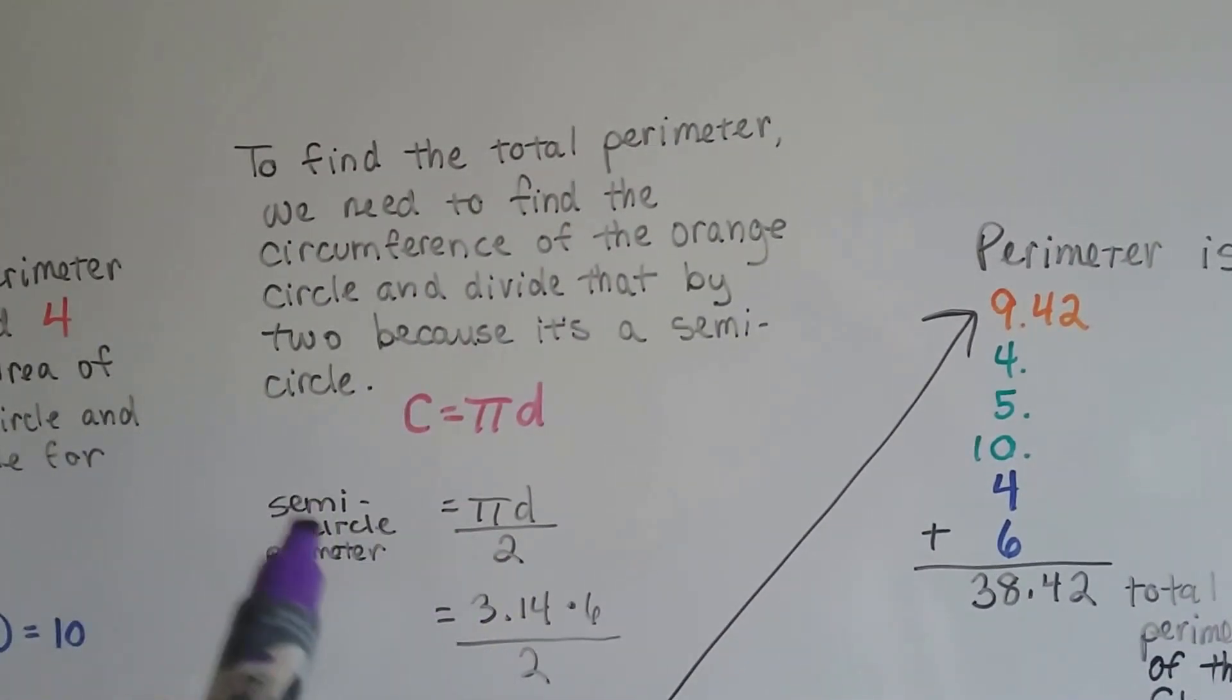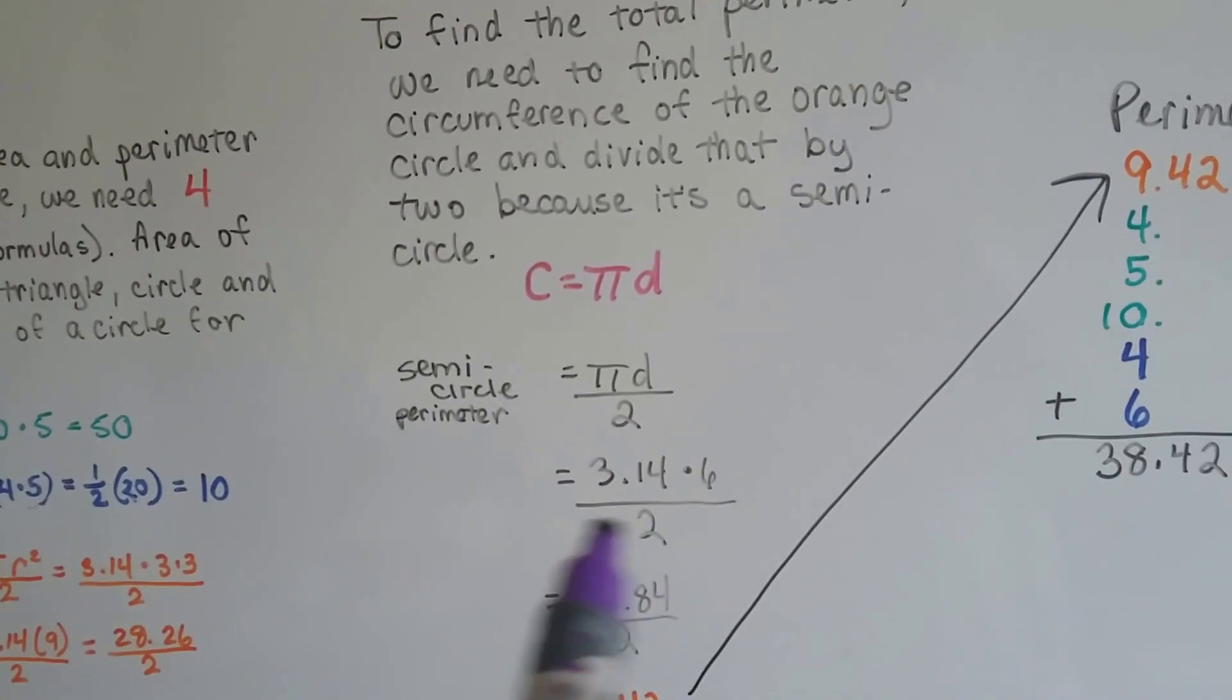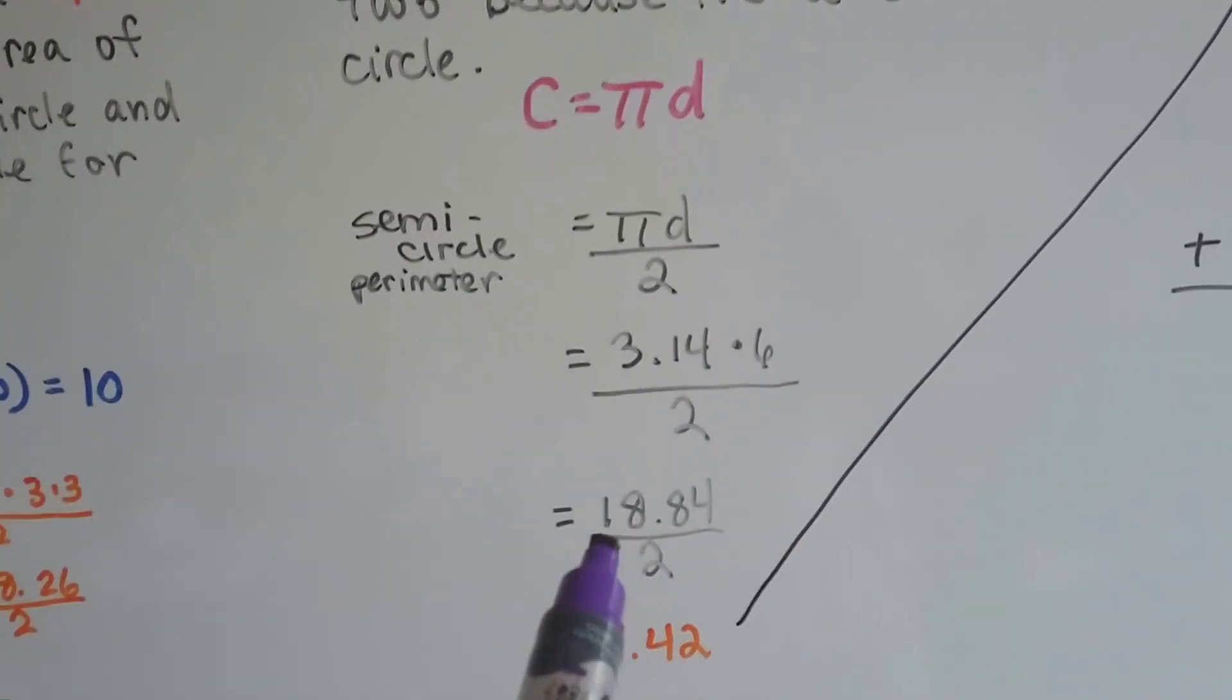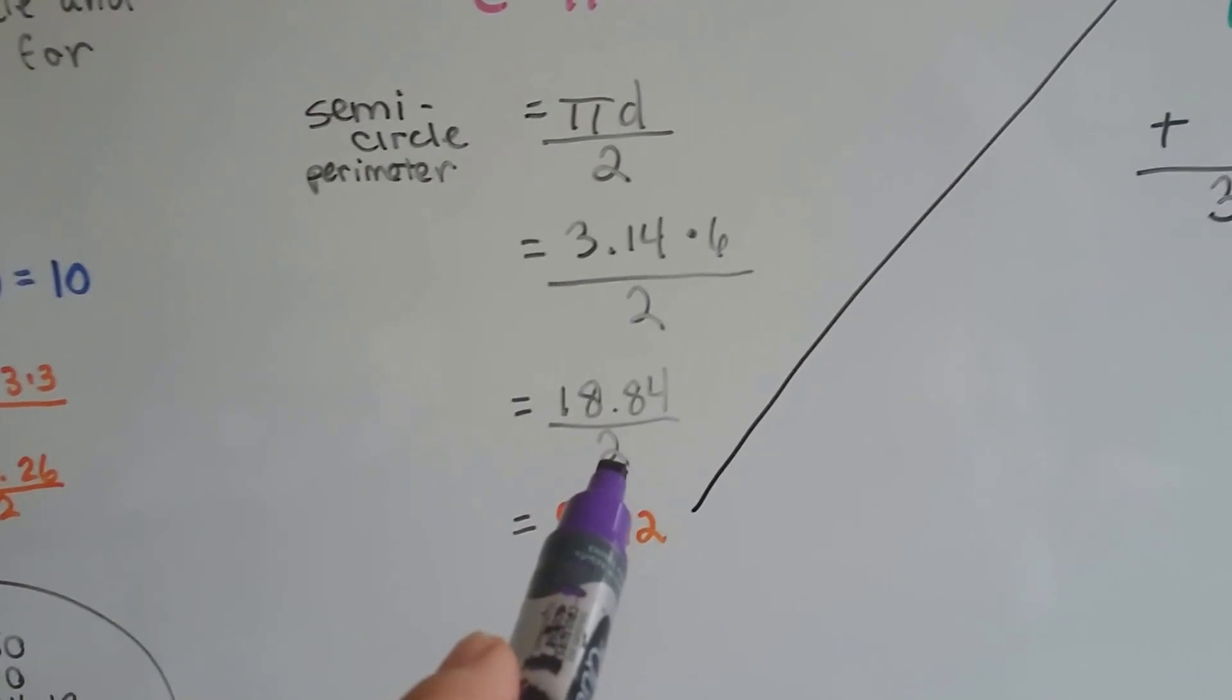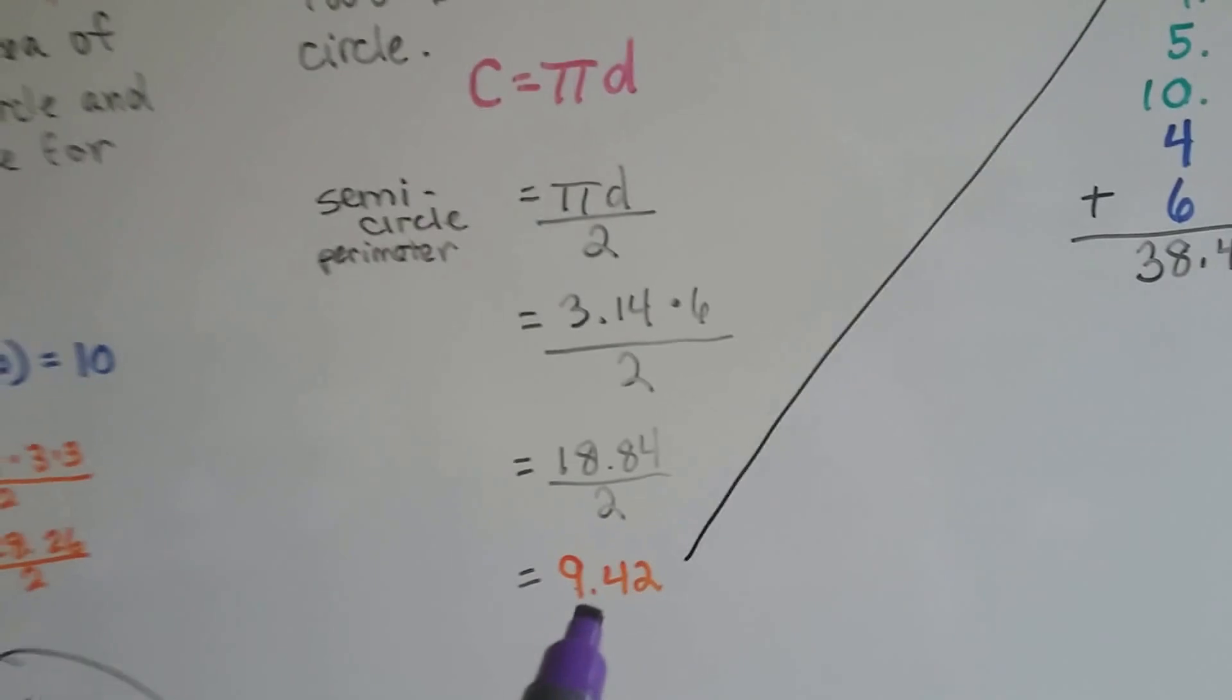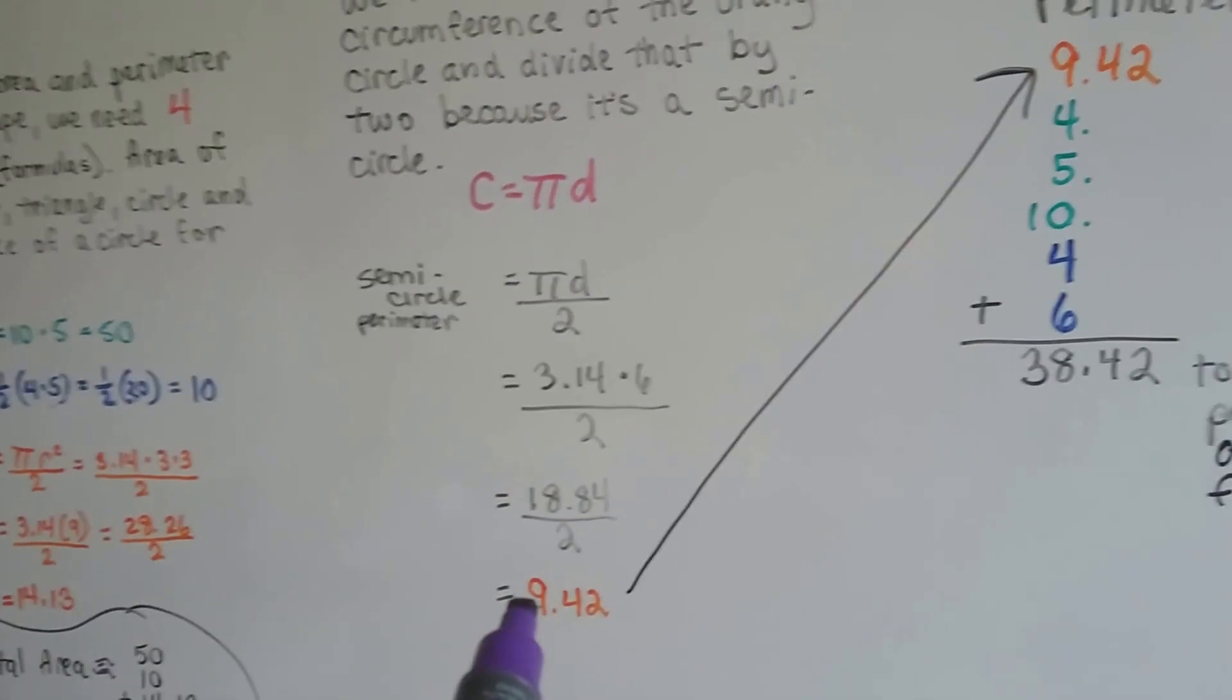We need to divide it by 2 because it's a semicircle. 3.14 times 6, remember we figured it has to be 6, over 2 to divide it by 2. 3.14 times 6 is 18.84. Now we need to cut it in half because it's a half circle. 18.84 is 9.42 when it's cut in half. So now we know that is the perimeter of just that half circle because it's the circumference, it's the perimeter.